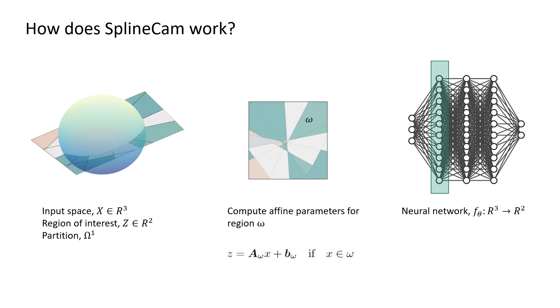After obtaining the first layer partition on Z, we analytically compute the per-region affine parameters for each of these regions. In this way, we end up with a piecewise affine operation that maps inputs from Z to the input of the second layer of the network.